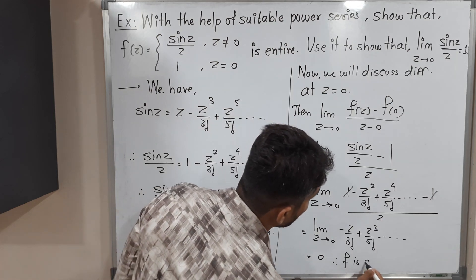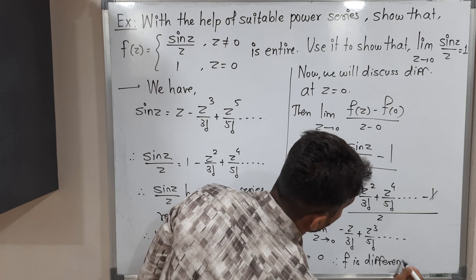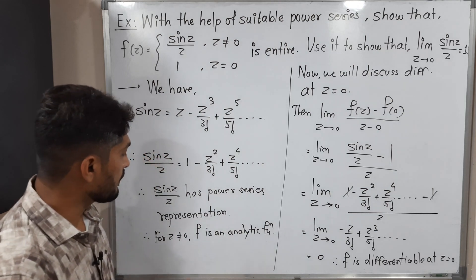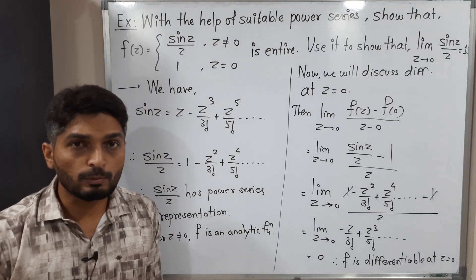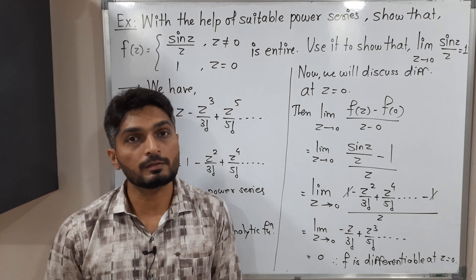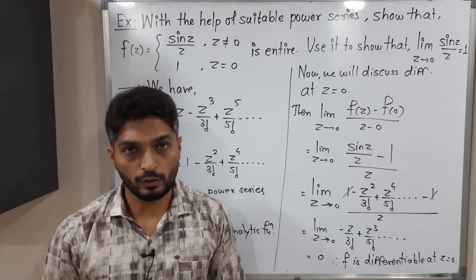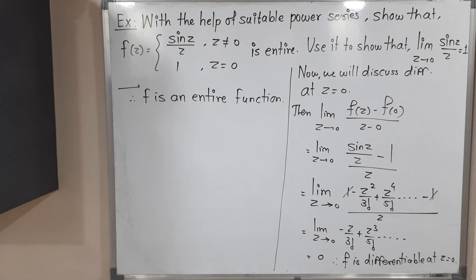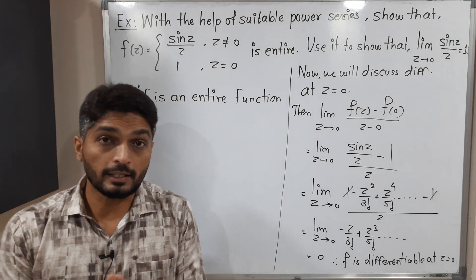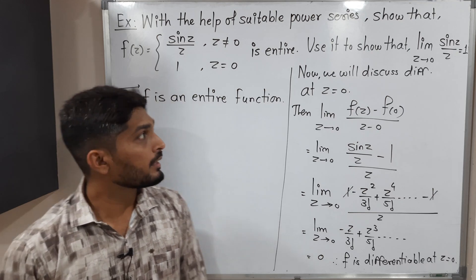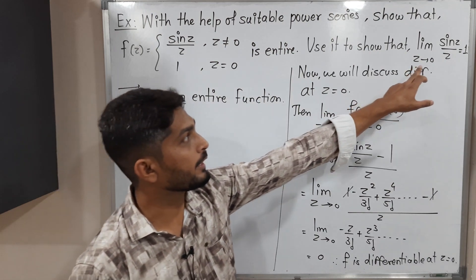Therefore f is differentiable at z equal to 0. For z not equal to 0 it is already differentiable, and for z equal to 0 it is also differentiable. Therefore the function f is analytic everywhere on the complex plane — it is an entire function, since it is differentiable at z equal to 0 and also for all z not equal to 0.